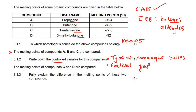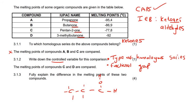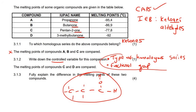A functional group is what makes it a specific homologous series. If you have a molecule that has an OH and all the rest is hydrogen, because of that functional group we would say this is an alcohol homologous series. So type of homologous series and functional group are very much correlated with each other.